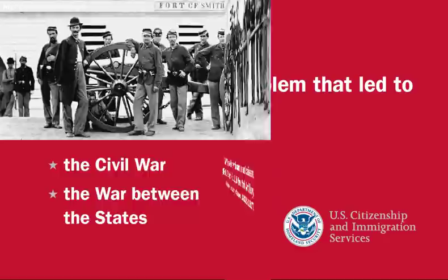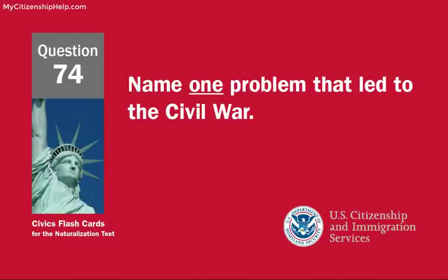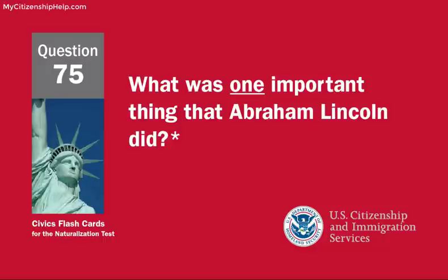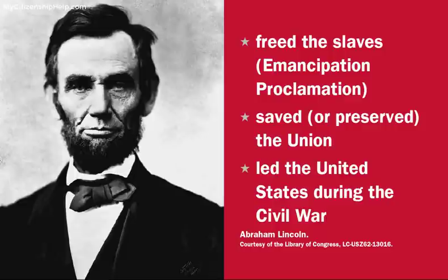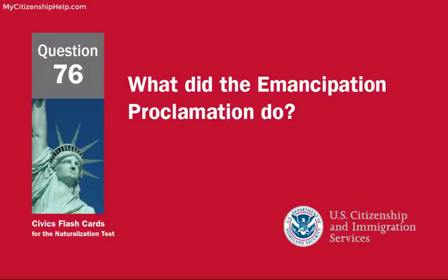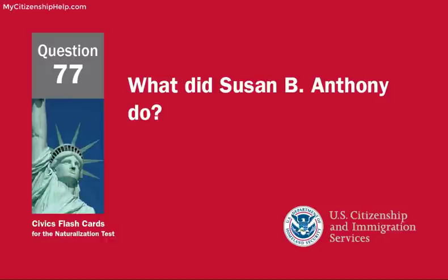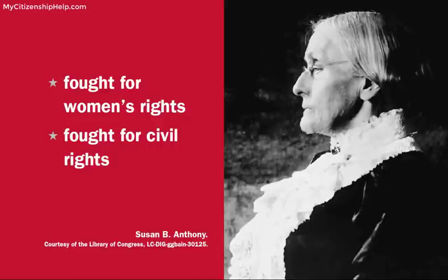Name one problem that led to the Civil War. Slavery. What was one important thing that Abraham Lincoln did? Freed the slaves — Emancipation Proclamation. What did the Emancipation Proclamation do? Freed the slaves. What did Susan B. Anthony do? Fought for women's rights.